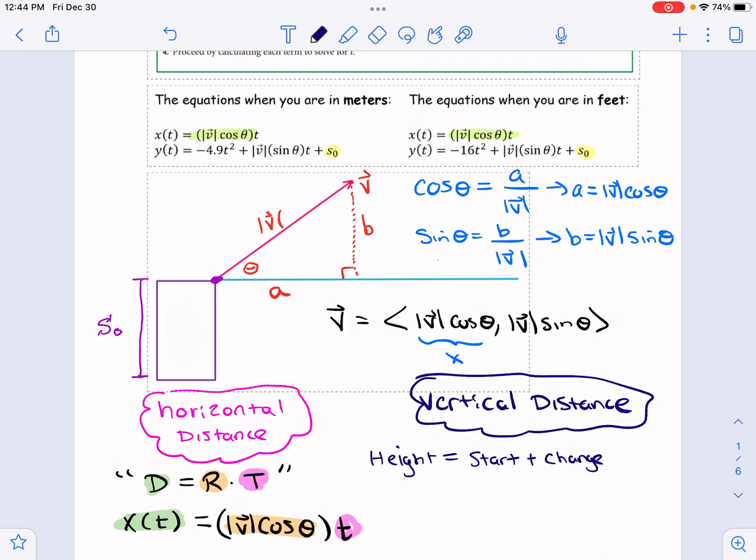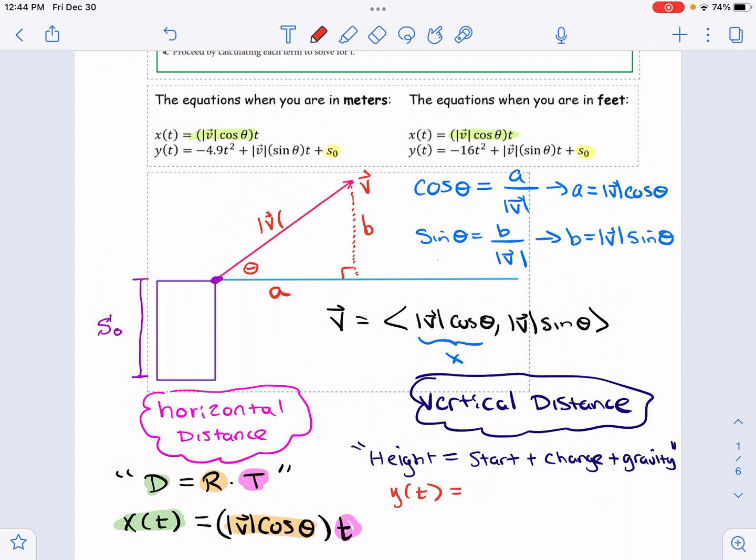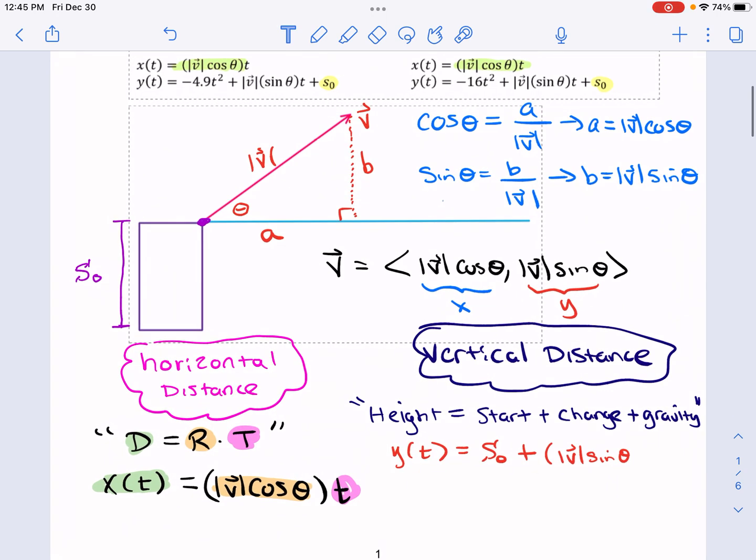But, of course, that change is going to be affected by gravity. So I'm just going to, this is very informal here, but this lets us kind of plug things in nicely. So I'm going to say, so your height is Y of T. Your start is your initial height, right? What's your initial height? It's S sub zero, whatever that is given to be. Your change is the same with your horizontal distance. It's a rate times time. So in this case, that's your rate. So I'm going to write magnitude of V sine of theta. I'm just going to zoom in a little bit. Sine of theta times T. But then, of course, that's not the end of the story, right? On a planet with no gravity, that would be the end of the story. But we know that on this planet, there's gravity.